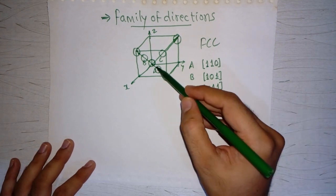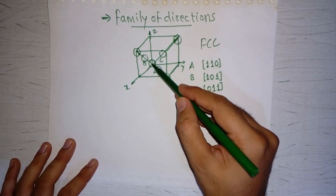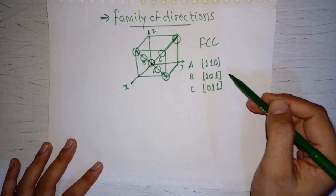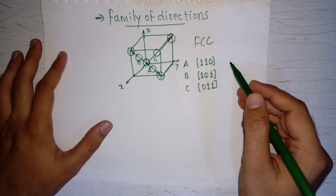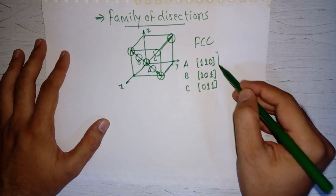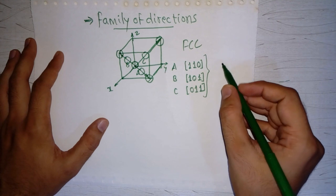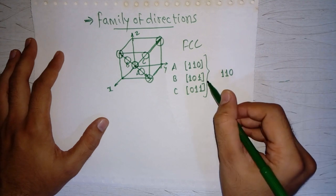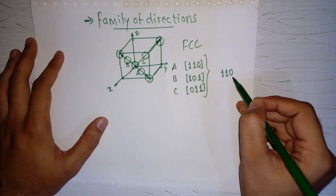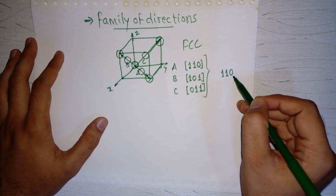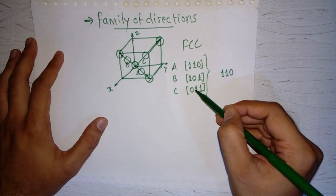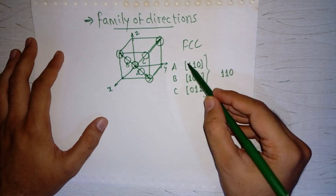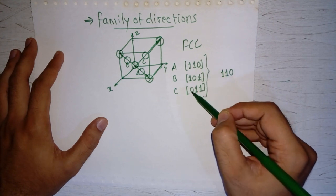If I want to define deformation on any of these directions, I can define it similarly for all. So I make a group and name it [1 1 0]. When I say the group name is [1 1 0], that means I am defining [1 1 0], [1 0 1], [0 1 1], as well as similar directions with negative values: [bar1 bar1 0], [bar1 0 bar1], [0 bar1 bar1], etc.